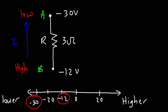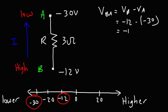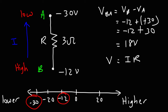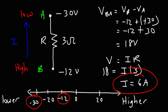Now that we have the direction of current flow, let's calculate the voltage or electric potential difference. The electric potential difference going from B to A is VB minus VA. So that's negative 12 minus negative 30, which is negative 12 plus 30, giving us a voltage of 18 volts across the 3-ohm resistor. Using Ohm's law, 18 equals the current times 3, so the current is 18 divided by 3, which gives us 6 amps. That's how you determine the electric potential difference across a resistor, the direction of the current, and the amount of current flowing through a resistor.